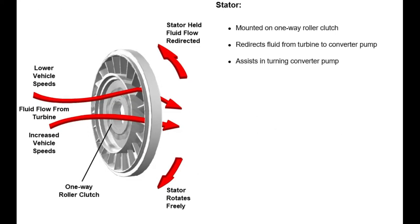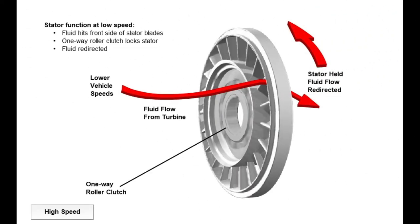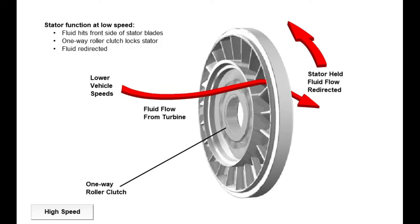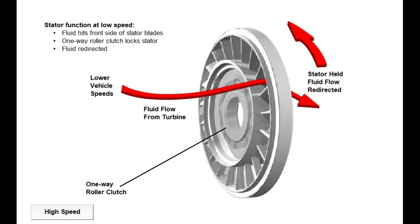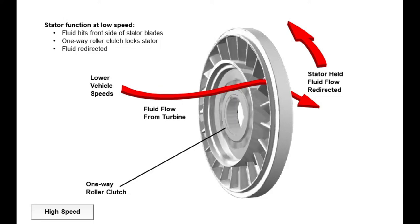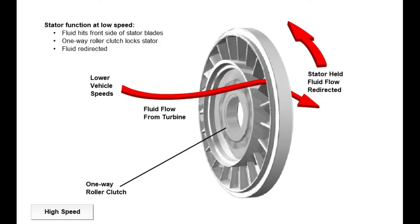The stator assembly is mounted on a one-way roller clutch between the converter pump assembly and the turbine assembly. The stator redirects fluid from the turbine to the converter pump assembly and assists in turning the converter pump assembly. At lower speeds, vehicles require more torque. To generate greater torque, fluid hits the front side of the stator blades and the one-way roller clutch prevents the stator from rotating in the same direction as the fluid flow. The locked stator redirects the fluid to assist the engine in turning the converter pump. The fluid leaving the converter pump now has more force to turn the turbine assembly and multiply engine torque.